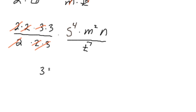We'll bring that 3 up. s to the 4th times m squared times n over t to the 7th. So that's what all that reduced down to.